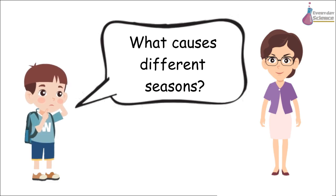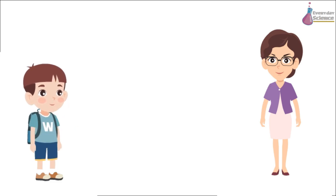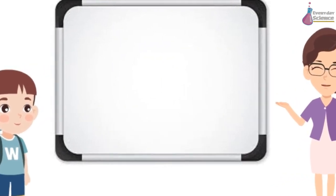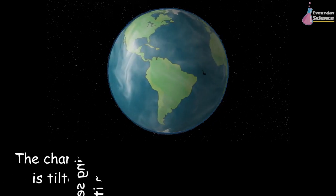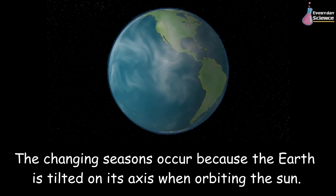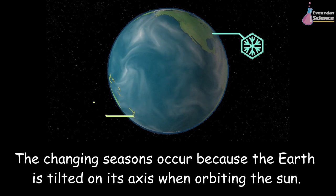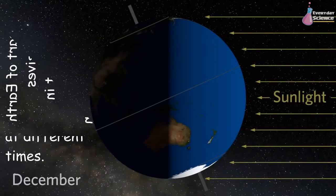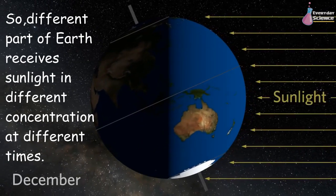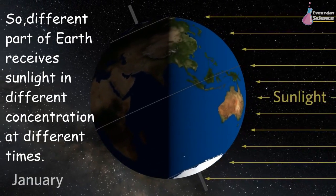What causes different seasons? The changing seasons occur because the earth is tilted on its axis when orbiting the sun, so different parts of earth receive sunlight in different concentrations at different times.